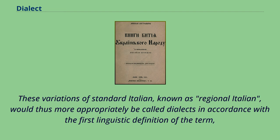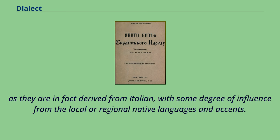Italians in different regions have developed variations of standard Italian specific to their region. These variations, known as regional Italian, would more appropriately be called dialects in accordance with the first linguistic definition of the term, as they are in fact derived from Italian with some degree of influence from the local or regional native languages and accents.